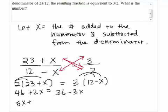By adding 3X on both sides, we get 5X + 46 = 36. So 5X = -10.